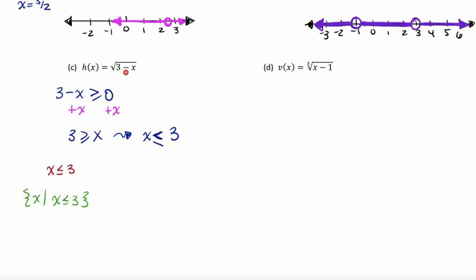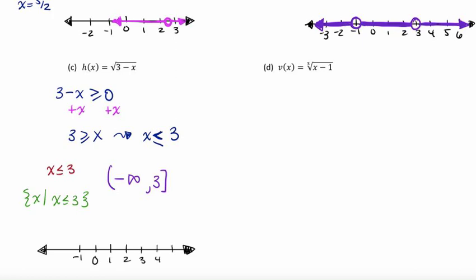Our inequality solution is x is less than or equal to 3. In set builder notation, the set of x such that x is less than or equal to 3. For interval notation, our largest value is 3 — it gets a bracket since it's included — and we go to negative infinity on the left. On the number line, we draw 3 as a closed dot and go off to the left toward negative infinity.